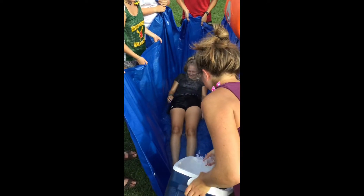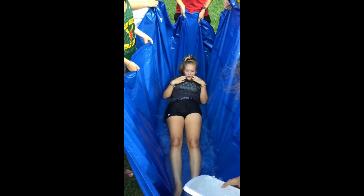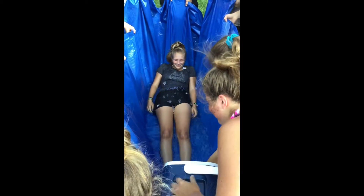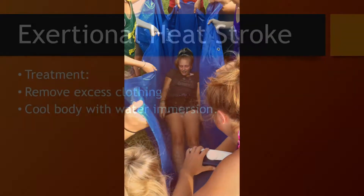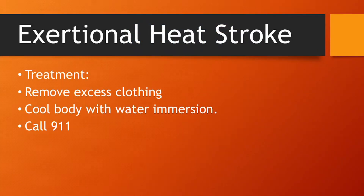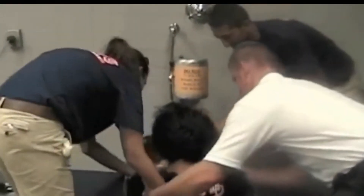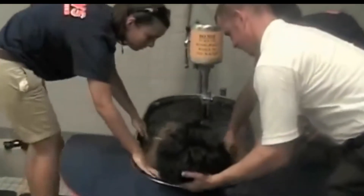Another cooling method, if a tub isn't available, is to use a tarp: place the victim inside the tarp, pour water and ice on them, and shake the tarp to circulate the water. With exertional heat stroke, you should call 911 as soon as possible, but transport to the hospital should only occur after the victim's core body temperature is below 101 degrees. Exertional heat stroke has a 100% survival rate when immediate cooling using a cold water immersion tub is done within 10 minutes of collapse.